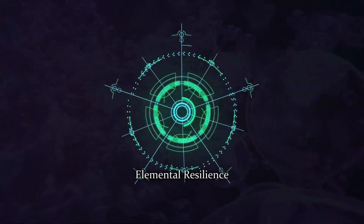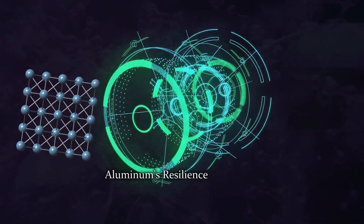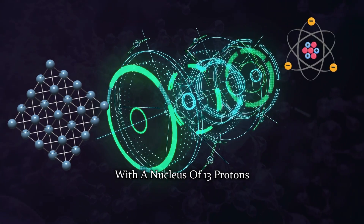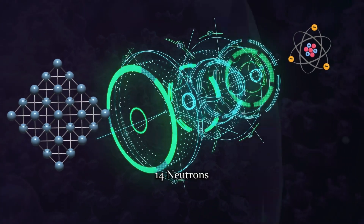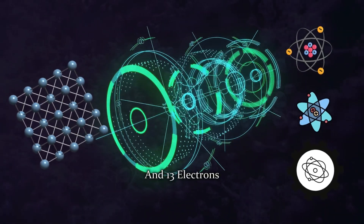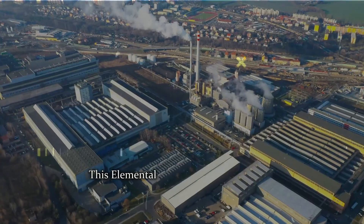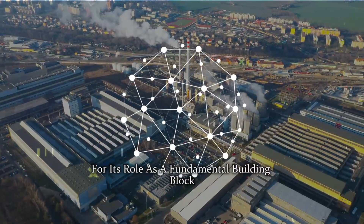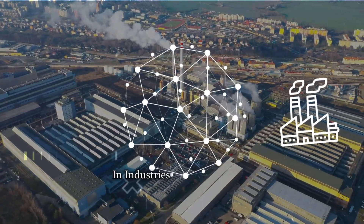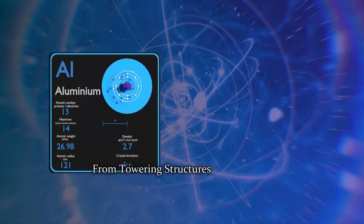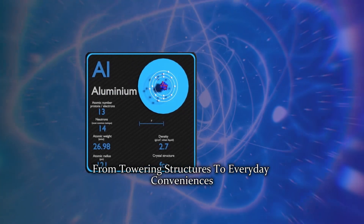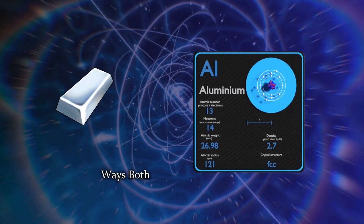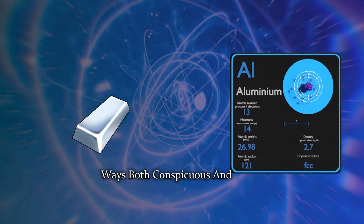Elemental resilience. Aluminum's resilience is intrinsic, with a nucleus of 13 protons, 14 neutrons, and 13 electrons. This elemental toughness sets the stage for its role as a fundamental building block in industries across the globe. From towering structures to everyday conveniences, aluminum's strength is harnessed in ways both conspicuous and subtle.